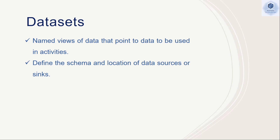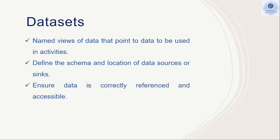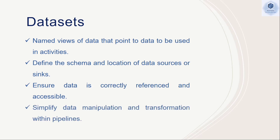Datasets provide the schema and location for your data source and sink. They act as a schema for a table, containing the structure you are going to access through your data source and destinations. This ensures the data is correctly referred to and accessible. Once you create a dataset, you can easily access the particular data you want to connect to. Datasets are also used to simplify manipulation and transformation activities — rather than dealing with multiple tables in a complex linked service, a dataset refers to the particular table you are going to transform.